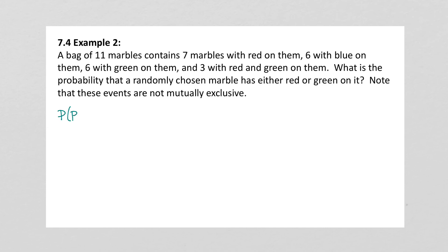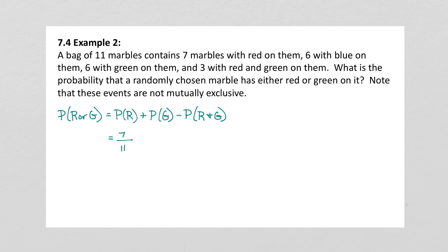The probability of red or green, similar to the last example, would be the probability of selecting a red plus the probability of selecting a green, minus the probability of selecting one with both red and green. There are 11 marbles total. The probability of red is 7 out of 11, the probability of green is 6 out of 11, and the probability of both red and green is 3 out of 11. That gives us a probability of 10 over 11, or as a decimal, 0.909091.